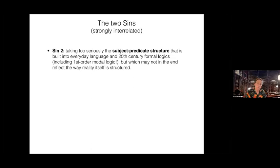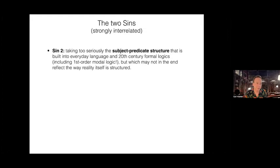What's the second sin? The second sin is taking too seriously the subject-predicate structure that is built into everyday language and also 20th century formal logics, including first-order predicate logic and first-order modal logic, but which may not in the end really be reflective of the way physical reality is structured. Many contributions to the debates on the hole argument presuppose that this can be taken for granted.